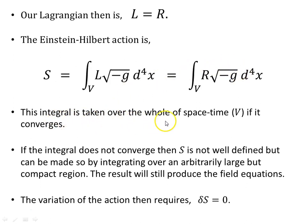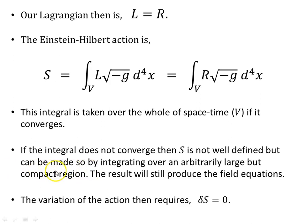The integral is taken over the whole of spacetime if it converges. If the integral does not converge, then S is not well defined, but can be made so by integrating over an arbitrarily large but compact region — that is, a region where all parts are connected with no disconnected separate parts. As long as the region is compact, it can be integrated over and the result will still produce the field equations.